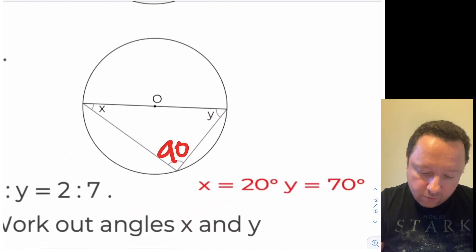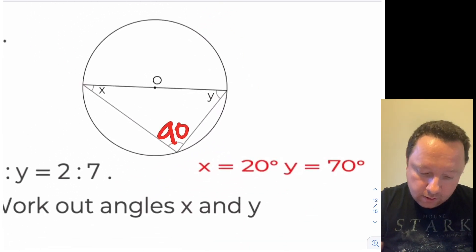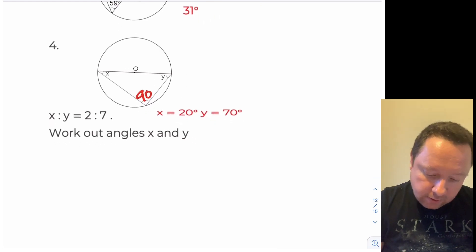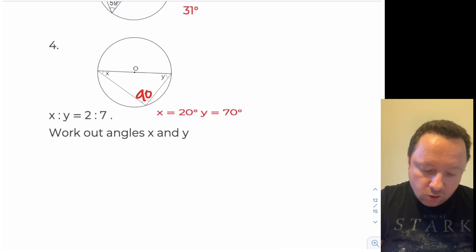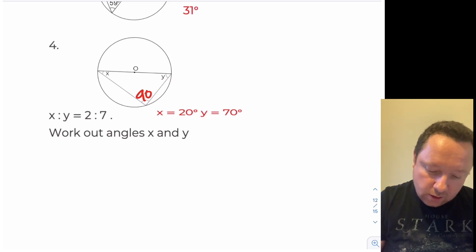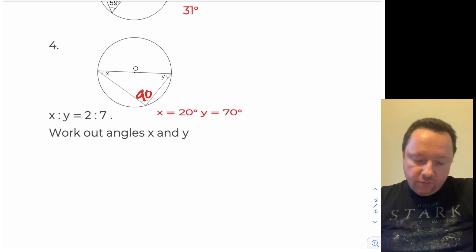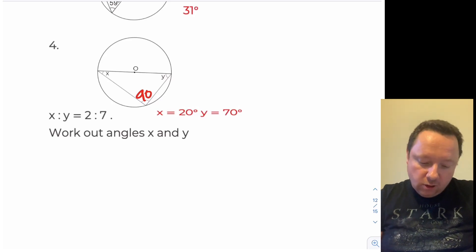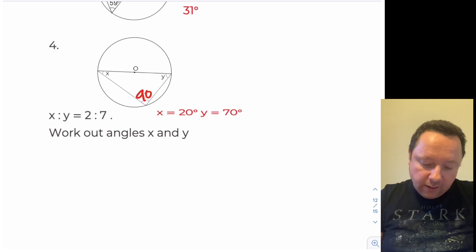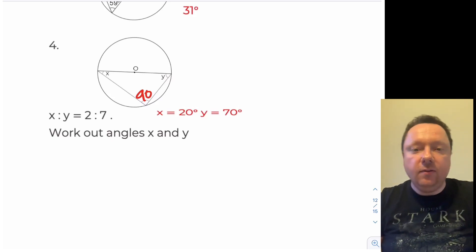And then the other one — I said it was a bit of a puzzle. It says work out the size of angle x and y, and the ratio of x to y is 2 to 7. Since we know this is 90 down here, we're left with 90 to share between x and y in the ratio 2 to 7. Multiplying 2 by 10 and 7 by 10 we get 20 and 70, which make 90.